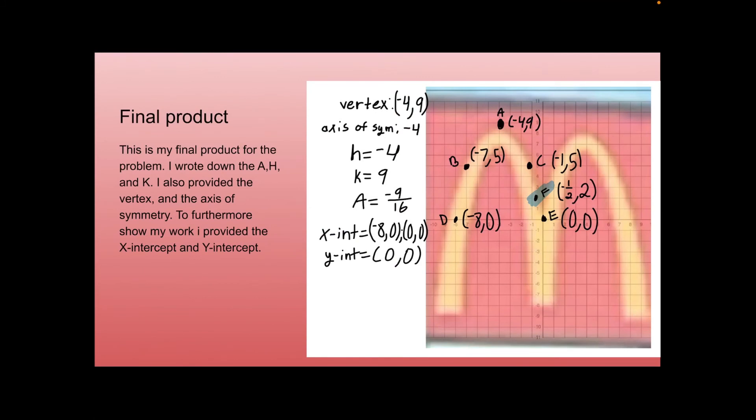For the final product, I wrote down the a, h, and k. I also provided the vertex and the axis of symmetry. To furthermore show my work, I provided the x-intercept and the y-intercept. The vertex is negative 4, 9. The axis of symmetry is negative 4. The h is negative 4. The k is 9. The a is negative 9 over 16. The two x-intercepts are negative 8, 0 and 0, 0. And the y-intercept is 0, 0.